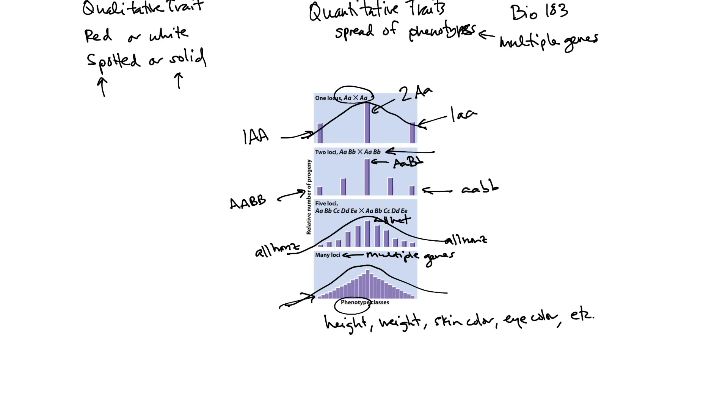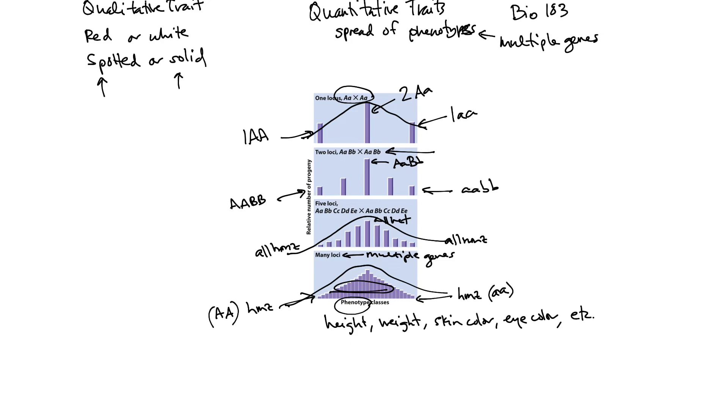The fewest individuals are going to be homozygous for either type of trait, either homozygous all recessive or homozygous all dominant. Most individuals are going to fall somewhere in the middle here and have an intermediate phenotype. So let's talk about an example of that.